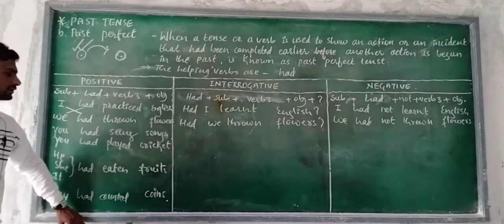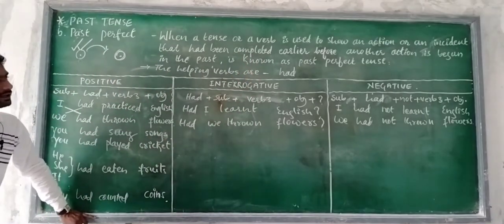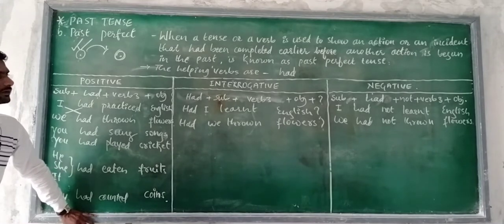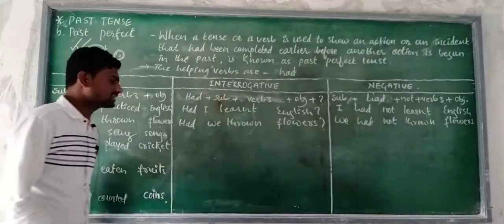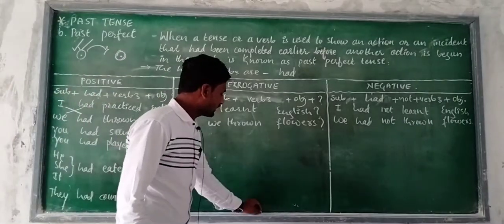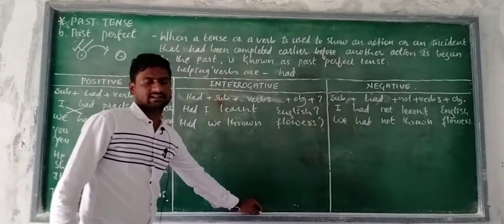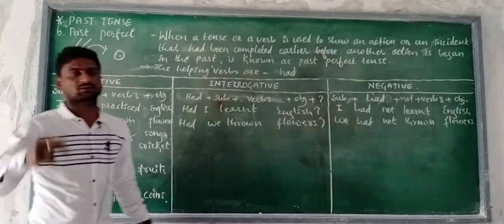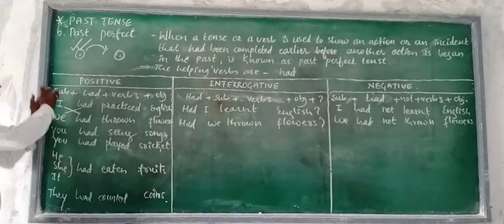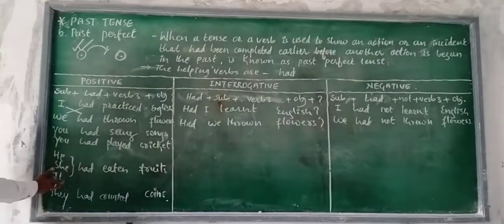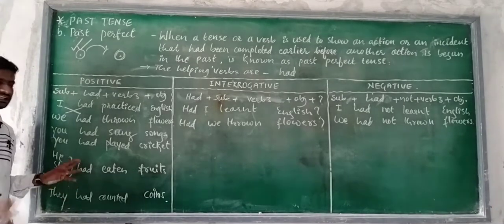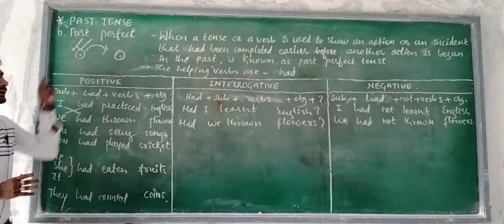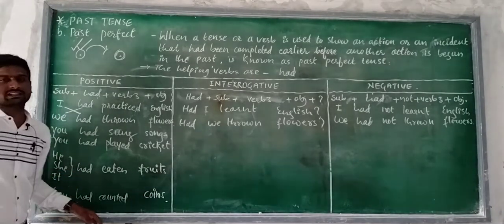I think this is a beautiful diagram for Past Perfect. I hope you will understand it. After this, I would like to give you the subject-verb table. This row is for subjects and this row is for helping verbs — and for every subject, only the single helping verb 'had' is used.